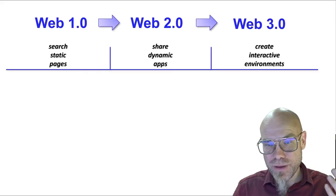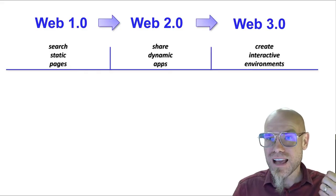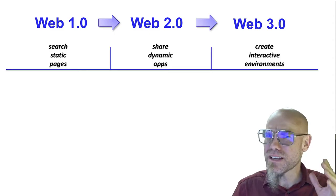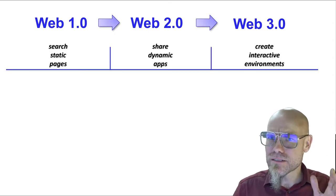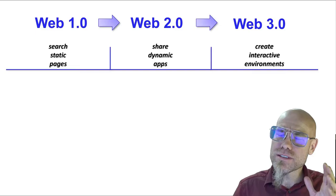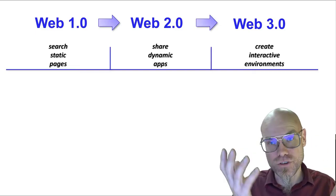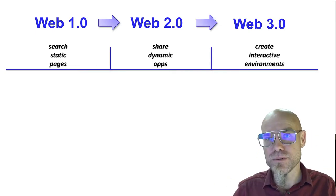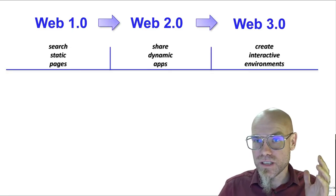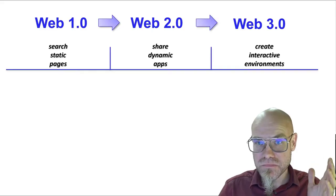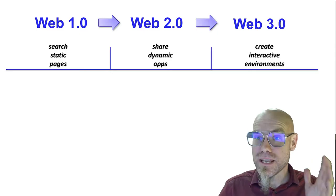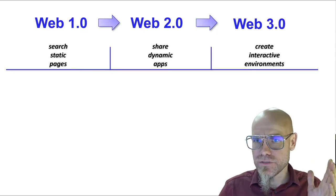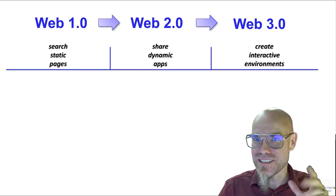Web 1.0 was made of pages, 2.0 of applications — think about social media, you are at 2.0. And 3.0 is environment, so you can think about virtual reality environments. Think about a normal web page for 1.0, a social media app for 2.0, and virtual reality for 3.0 — that's pretty close to what people are talking about, though they might disagree in the details.